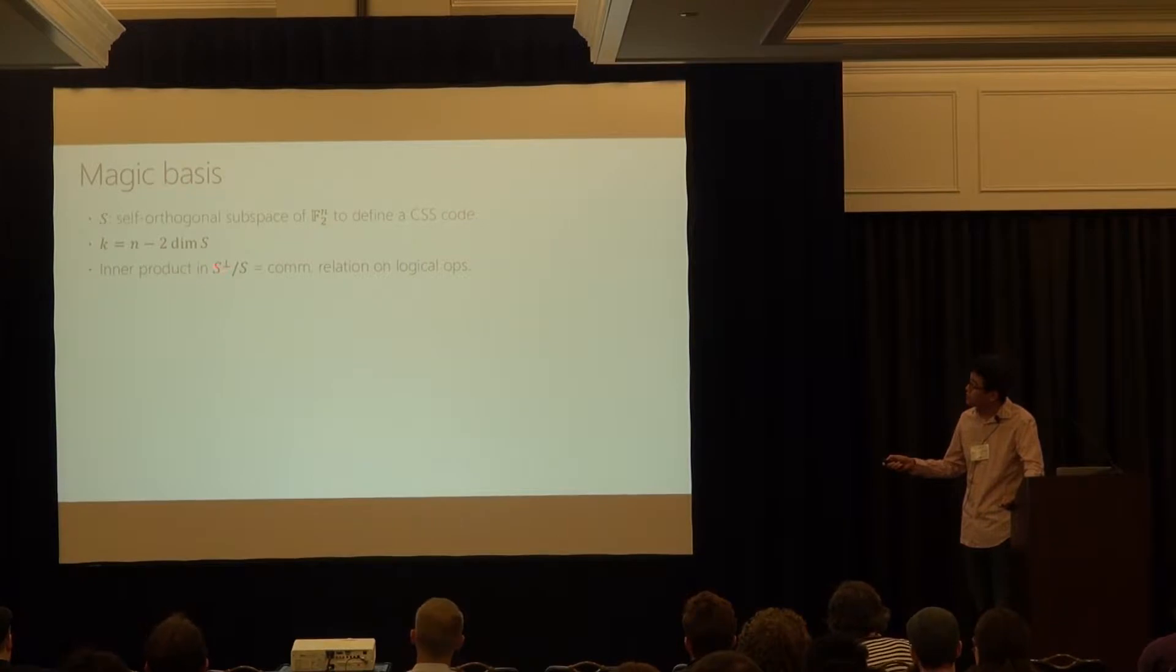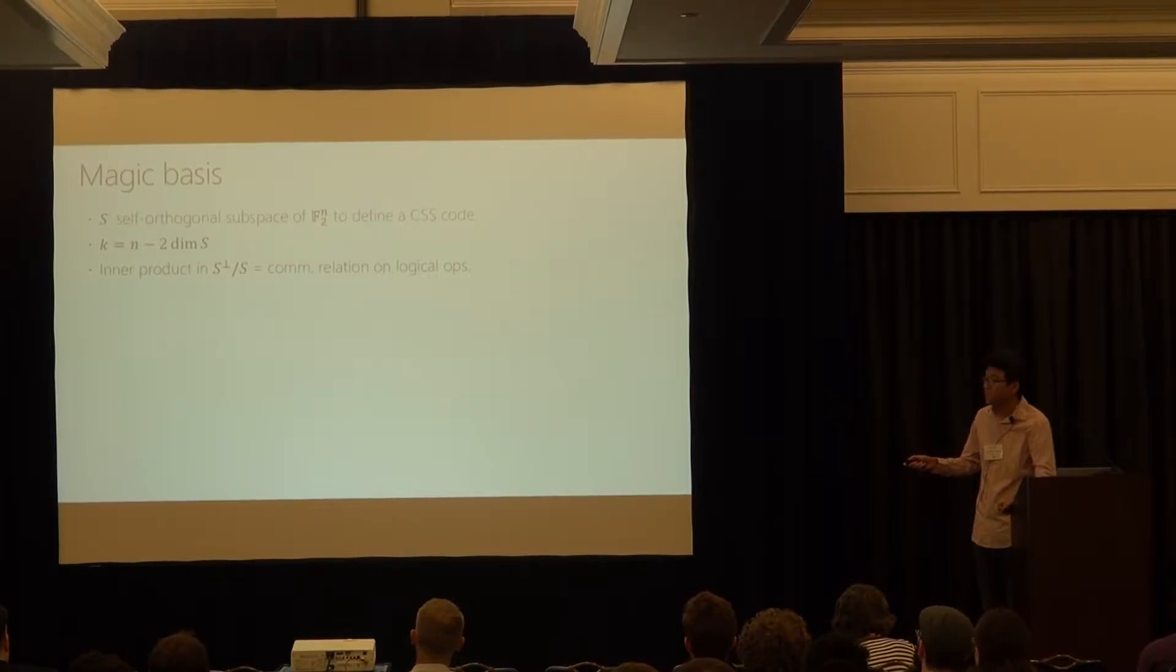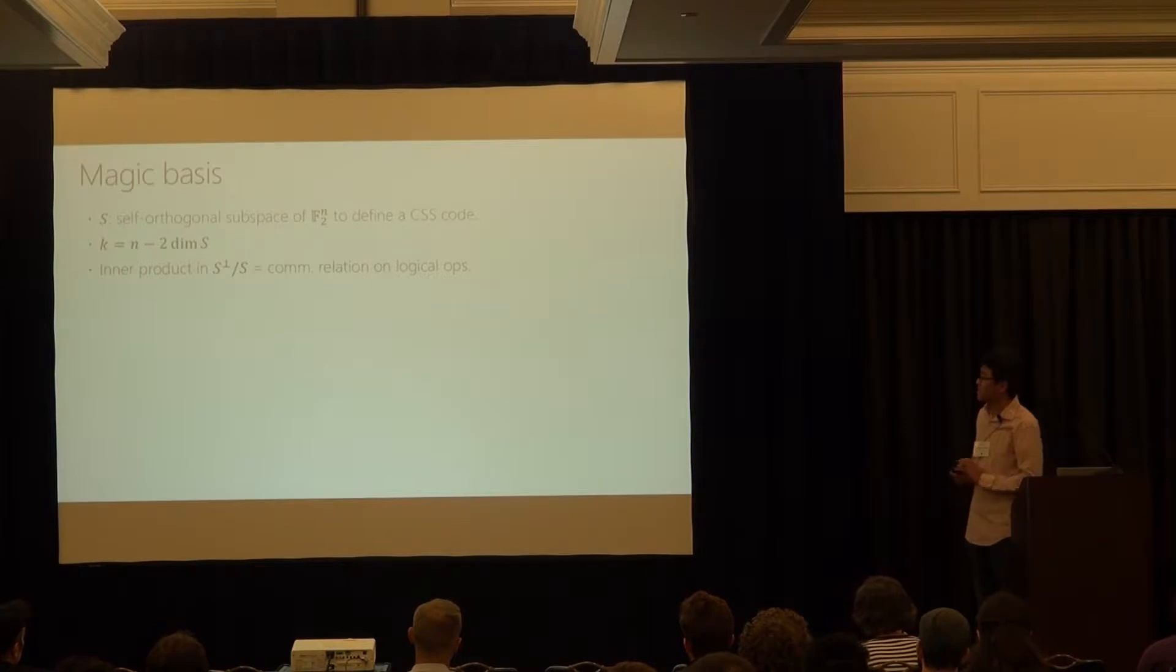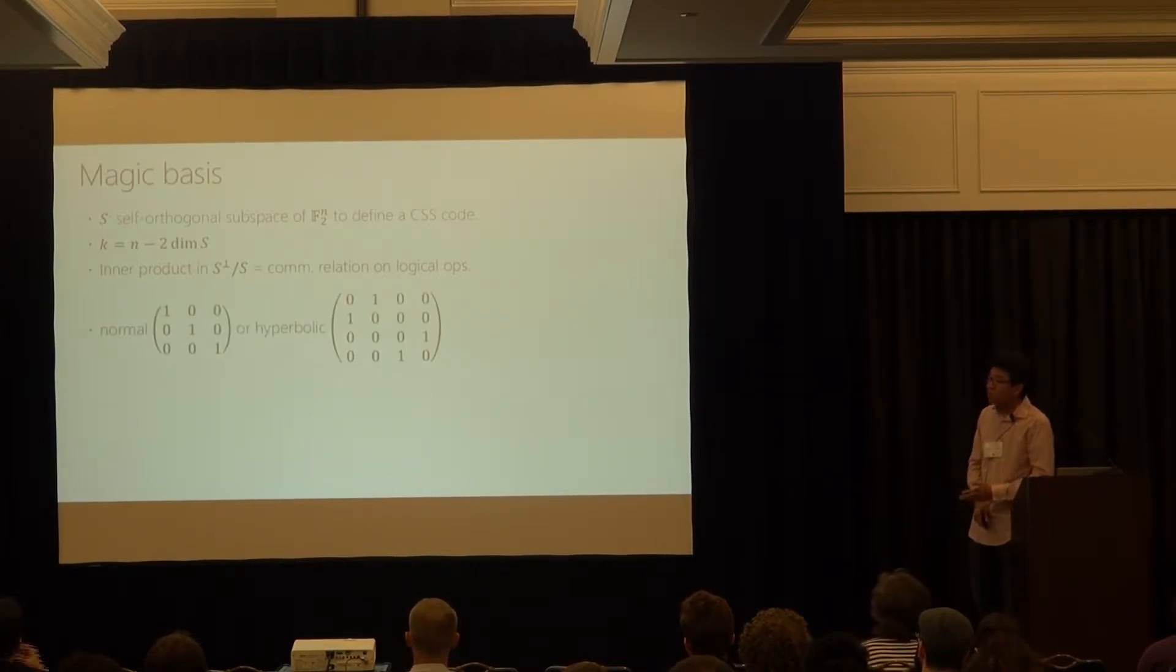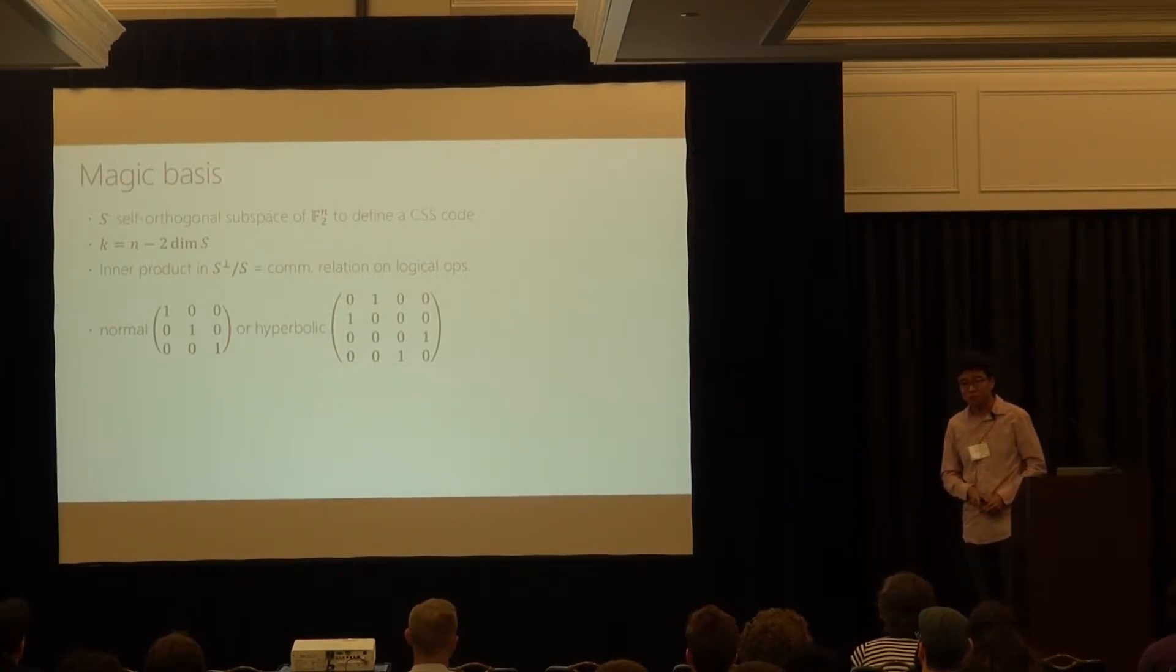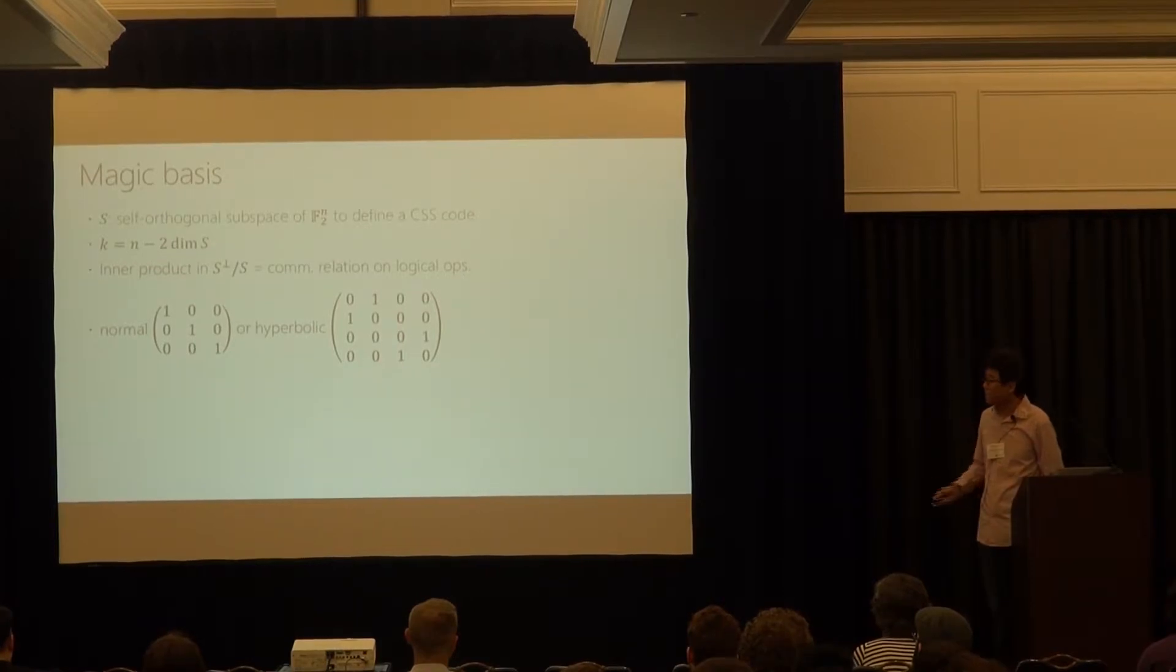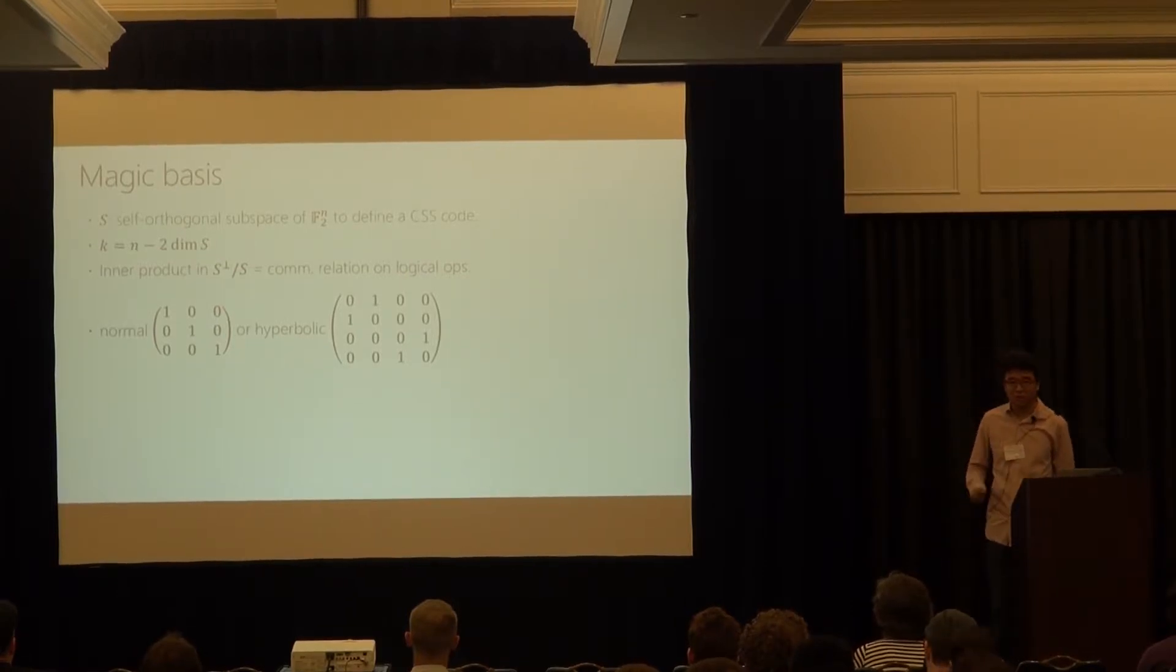So number of encoded qubits will be the number of total physical qubits minus the stabilizer dimension. So the stabilized dimension is the two times of dimension of the self orthogonal space. So K equals N minus two S and the inner product in the usual sense. And when you're dealing with the binary vector space in this dual space, it's going to define your commutation relation among the logical operators. So S perp is going to be the, if you think of S here, the first S as a X stabilizer state, X stabilizer space, then the X orthogonal complement is going to be the Z logical operator space, modulo Z stabilizers. So due to the self-orthogonality here, there is a, I'm mixing two things, but that's it.